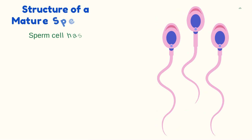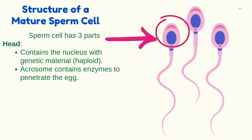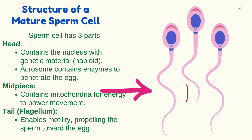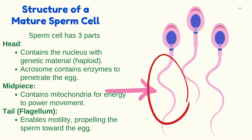A mature sperm cell has three parts. The head contains the nucleus with haploid genetic material and the acrosome, which contains enzymes to penetrate the egg. The midpiece contains mitochondria to provide energy for movement. The last part is the tail, or flagellum, which enables motility by propelling the sperm toward the egg.